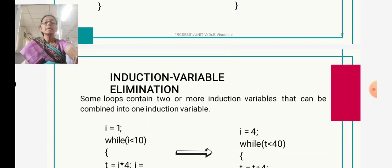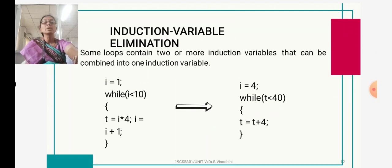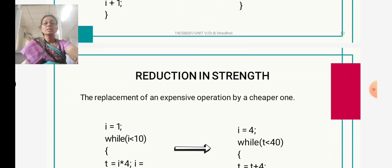Next is induction variable elimination. Some loops contain two or more induction variables that can be combined into one. For example: i = 1, while i < 10, t = i * 4, i = i + 1. In the inner loop, we are only doing 't + 4'. So instead of using the 'i' value, we use only the statement 't = t + 4', reducing two statements in the inner loop to one induction variable.